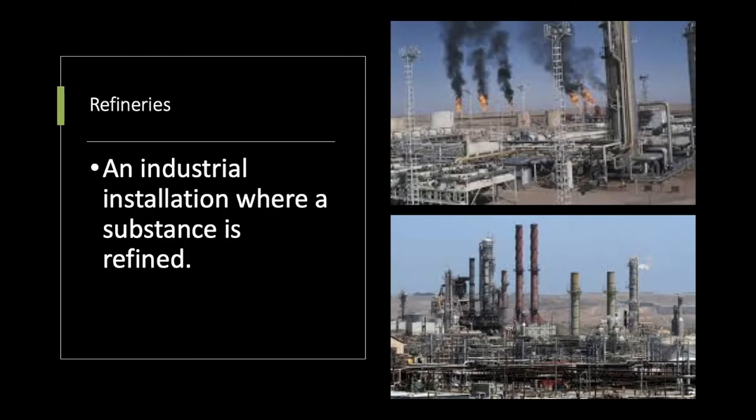Next word is refinery, which is an industrial installation where a substance is refined. We'll talk about refineries in the oil unit — refining chemicals or petroleum from the ground into something we can use, whether it's gasoline, engine oil, diesel fuel, or jet fuel. They have to take that oil out of the ground and make it into something else; you can't just put it in your car and expect it to run.